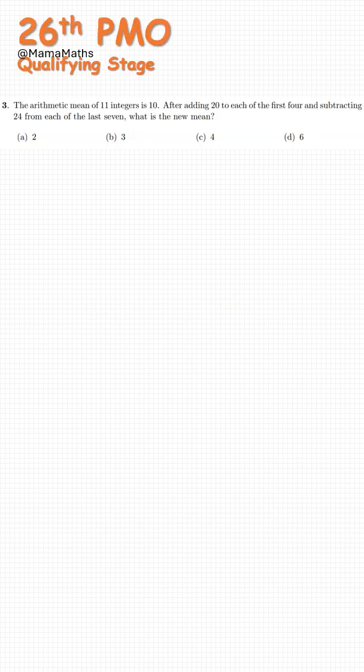Hi, this is Mama Matz. Third question from part 1. The arithmetic mean of 11 integers is 10. After adding 20 to each of the first 4 terms and subtracting 24 from each of the last 7, what is the new mean?